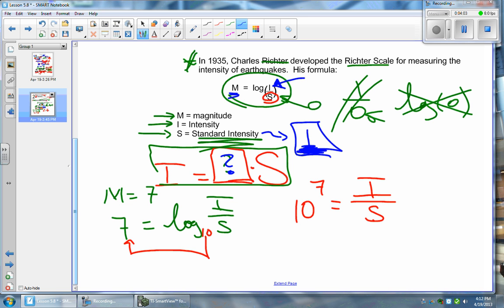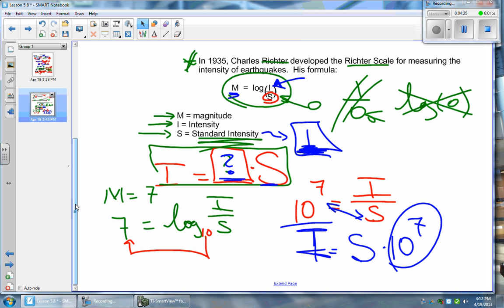Why? Because you're trying to find this guy, right? Something times S. And there's good old faithful cross multiply. Look at that. So S times 10 to the 7 equals our intensity. So if you look at that, you got 10 to the 7 times the standard intensity. Wow, that's a pretty powerful earthquake.